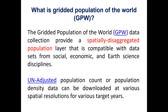GPW can be downloaded as a population count or as population density. At the equator, population count and population density are the same. The farther you move away from the equator towards the north or south pole, the population count and population density will differ. Population count is the true number of people living in that particular grid cell. We look at the entire world context as non-overlapping grid cells at several resolutions and for several target years.